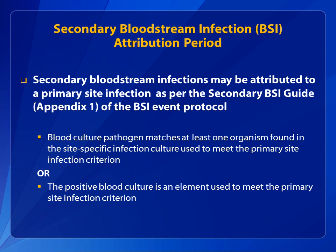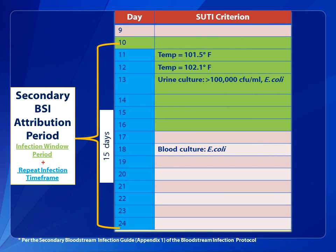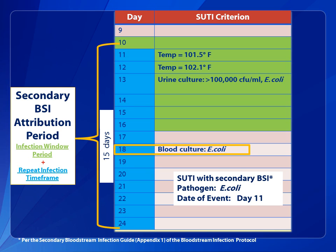In accordance with the secondary bloodstream infection guide, Appendix 1 of the BSI event protocol, a secondary bloodstream infection may be attributed to a primary site infection if either of the following is true: the blood culture pathogen matches at least one organism found in the site-specific infection culture used to meet the primary site infection criterion, or the positive blood culture is an element used to meet the primary site infection criterion. Returning to the SUTI example, a blood culture collected on hospital day 18 — a day included in the secondary BSI attribution period — is positive with a pathogen that matches at least one organism found in the urine culture. Therefore, the final determination is a SUTI with a secondary BSI pathogen E. coli and the date of event day 11.